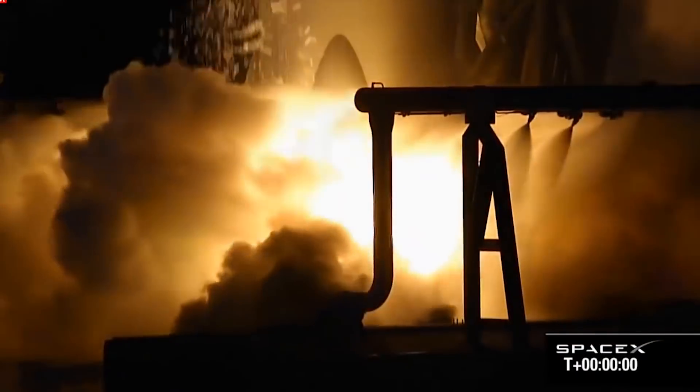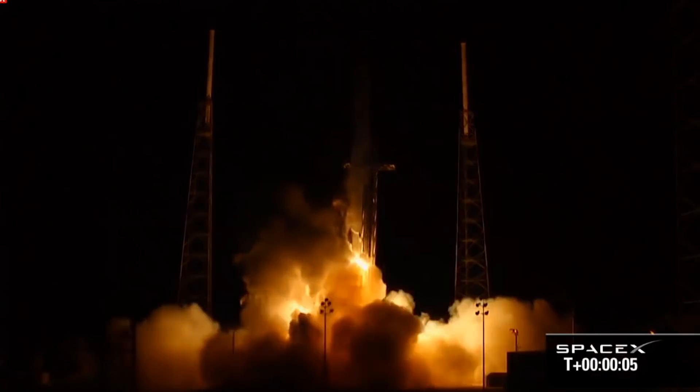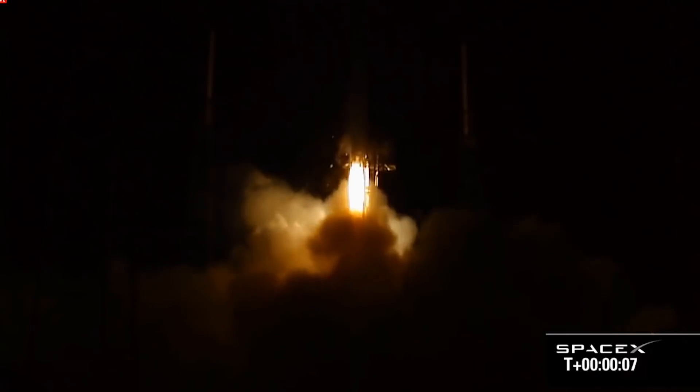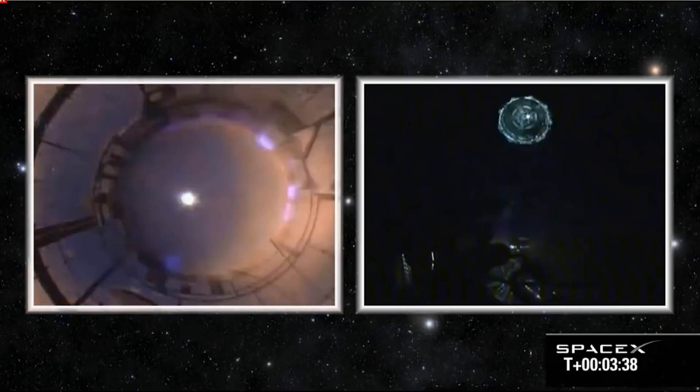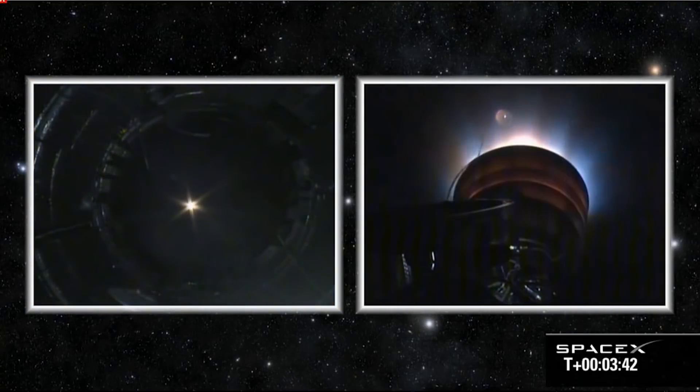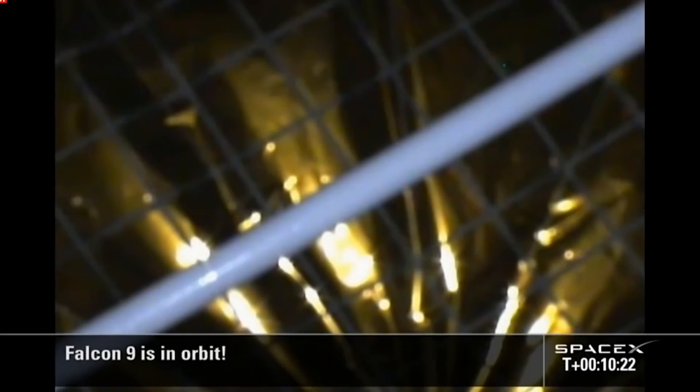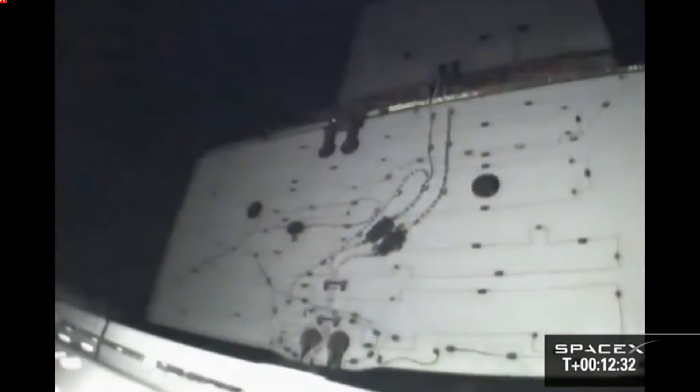So this launch would occur on May 22nd of 2012. And again, being the third launch of the Falcon 9, it would be the first to be launched at night. Again, the initial launch is very stable. Ascent is looking great. About three minutes into the flight, the second stage is separated and continues to burn for another six minutes to bring the Dragon capsule into a low Earth orbit. At this point, the second stage releases the Dragon capsule, and just shortly after, the solar panels are deployed.